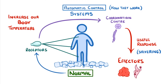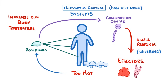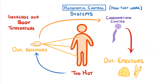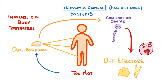But what if this goes too far, and instead of returning to normal, we actually get too hot? Well, a different set of receptors would detect this rise in temperature and send their own signals to our coordination centres. This in turn would cause a different group of effectors to carry out their own response, such as sweating. In time, our temperature would go back to normal. And then if we got a bit too cold, the whole process would start over again.